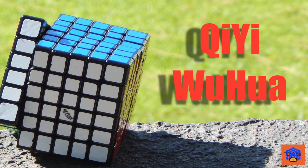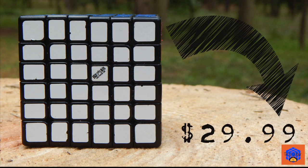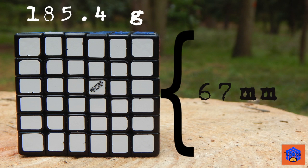Hello guys, I'm Taco Cuber and today I am going to review the Chiii Wu Hua 6x6. This cube costs $29.99 at thecubico.us. The cube measures 67mm and weighs around 185 grams.